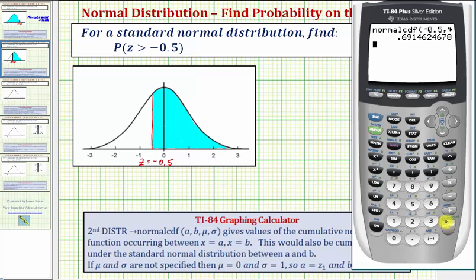So now if we press enter, this will give us the area to the right of z equals negative 0.5 under the standard normal distribution, which is the probability that z is greater than negative 0.5. So the probability as a decimal is approximately 0.6915.